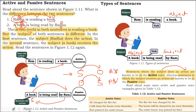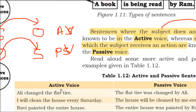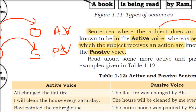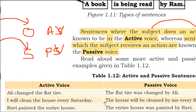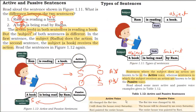Let us take a few more examples. Active voice: Ali changed the tyre — Ali is subject doing work on tyre. I will clean the house every Saturday — I is subject, house is object. Ravi painted the entire house — subject doing action on object. Passive voice: The flat tyre was changed by Ali — subject gets action from object. The entire house was painted by Ravi — house is the subject getting action from Ravi. So subject does action on object = active; subject receives action from object = passive.